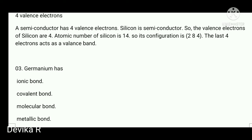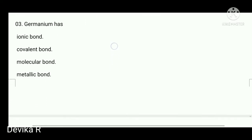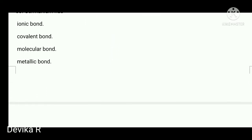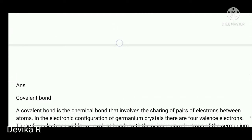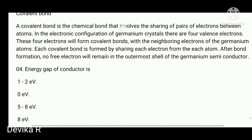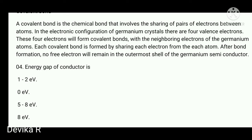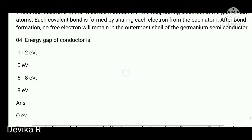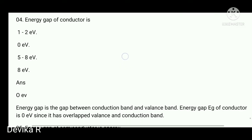All semiconductor materials have covalent bonds, so covalent bond is the right answer. Silicon also has a covalent bond. Next question: what is the energy gap of a conductor? The energy gap of a conductor is zero electron volts because the conduction band and valence band are overlapped. So zero electron volt is the right answer.